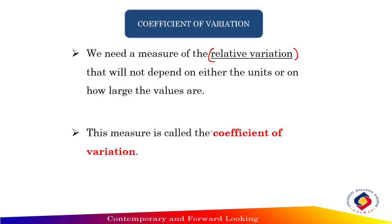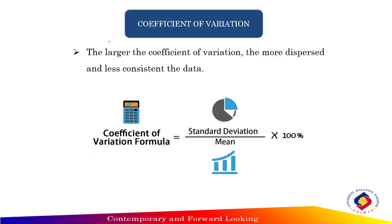The measure is called the coefficient of variation. The larger the coefficient of variation, the more dispersed and less consistent the data. And the smaller the coefficient of variation, the more consistent the data.